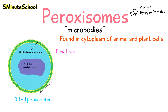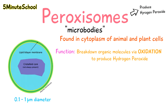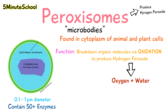Their role is to break down organic molecules by the process of oxidation to produce hydrogen peroxide, which is then converted into oxygen and water. Within the peroxisome there are about 50 enzymes, and they're all separated from the cytoplasm by a lipid bilayer single membrane, which acts as a barrier.